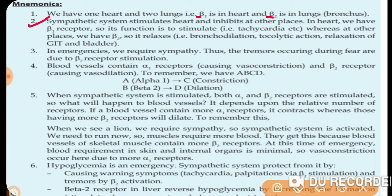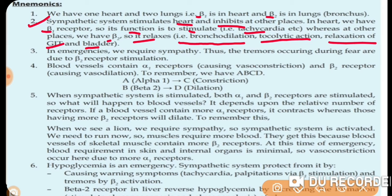When the sympathetic system is stimulated, it stimulates the heart and inhibits at other places. In the heart we have beta-1 receptors, so the function is to stimulate — causing tachycardia. In other places we have beta-2 receptors, which are inhibitory, so they cause relaxation: bronchodilation, tocolytic action on the uterus, relaxation of GIT and bladder.